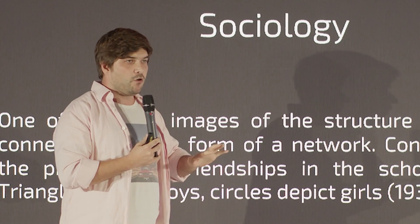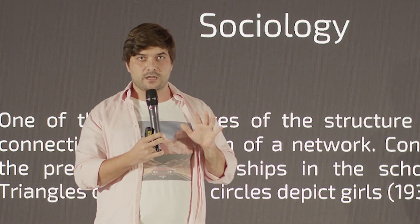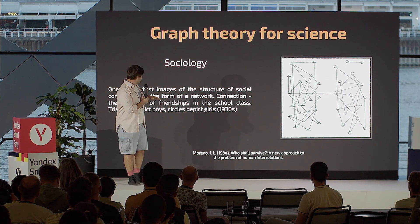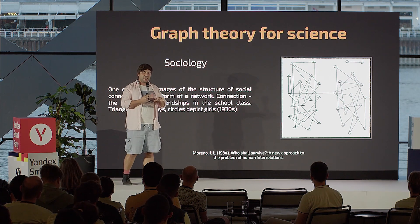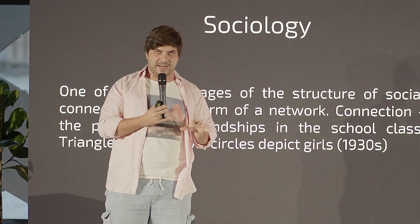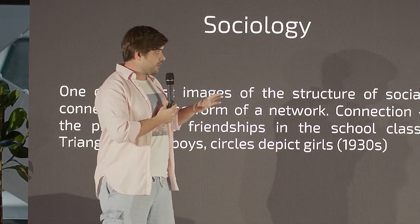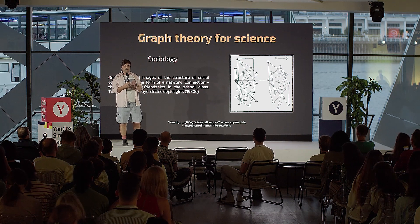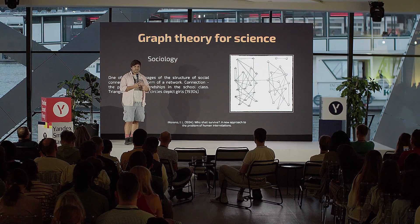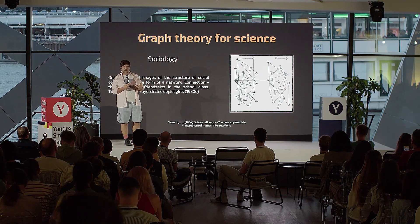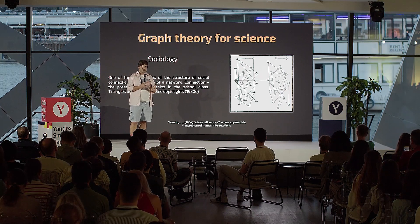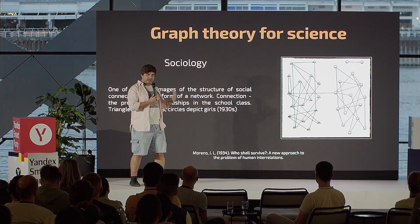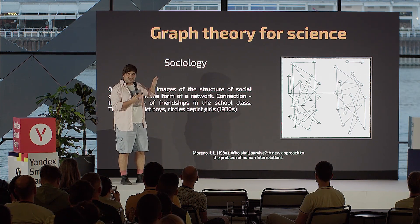Here's an example of one of the earliest uses of graph theory in sociology, from 1934. It's a depiction of the relationship between boys and girls in, I believe, the fourth grade — around ten-year-old children. Triangles are boys, circles are girls, and you can see that there are not a lot of relationships between them. These two groups are pretty encapsulated. This is one thing graph theory can do: as soon as you depict something as a graph, you can actually see a kind of story.